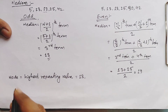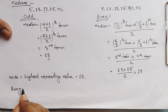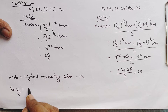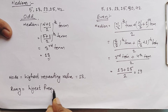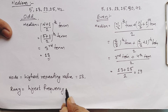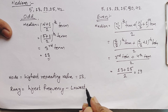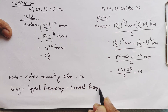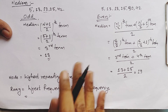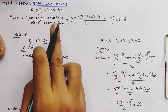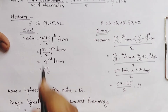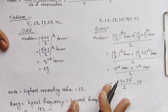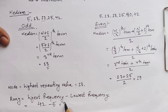The final thing to calculate is range. Range equals the highest value minus the lowest value. In our question, the highest value is 42 and the lowest is 5, so 42 minus 5 equals 37. That is the range.